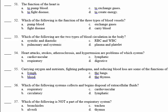Which of the following is the function of the three types of blood vessels? We have three types: the arteries that carry blood away from the heart, the veins that carry blood towards the heart, and the capillaries that make sure blood reaches the smallest cells and allow exchange of material between cells and blood. The function of all three types is to carry the blood. So 52, D.